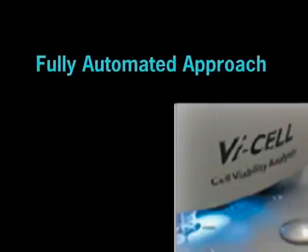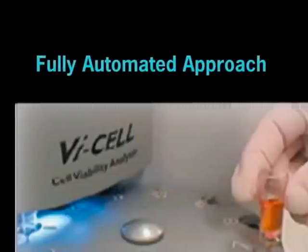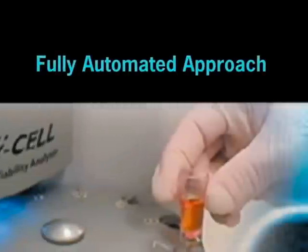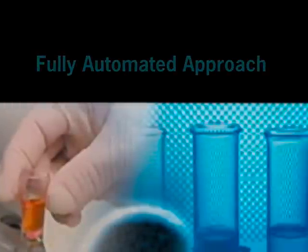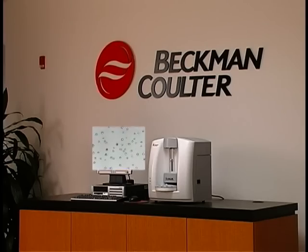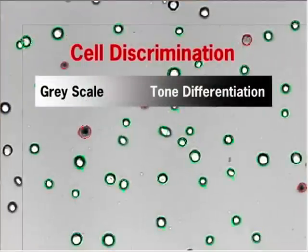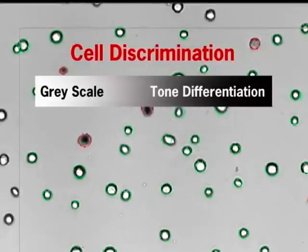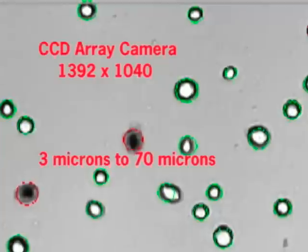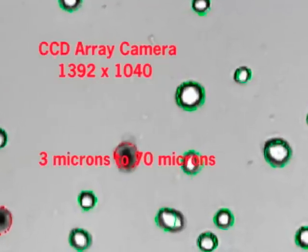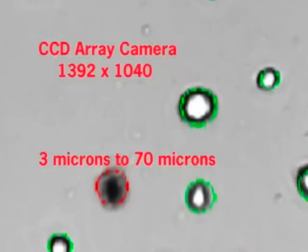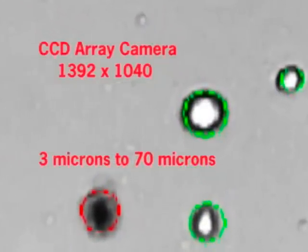The VisCell XR instrument integrates the Trypan Blue dye exclusion method and digital imaging technologies. The images are then analyzed using a proprietary algorithm for continuous grayscale tone differentiation for cell variation discrimination. The system's autofocus feature, coupled with a 1392 by 1040 CCD array camera, allows for analysis of cells from 3 microns to 70 microns in size.